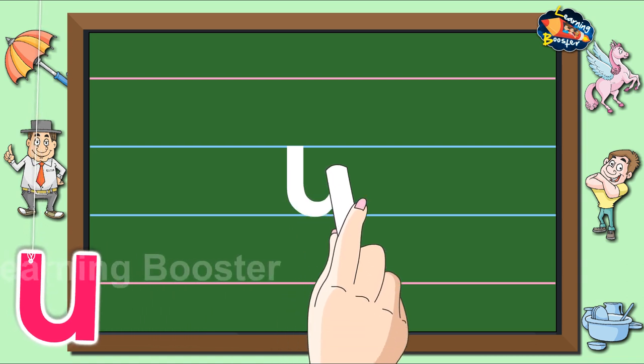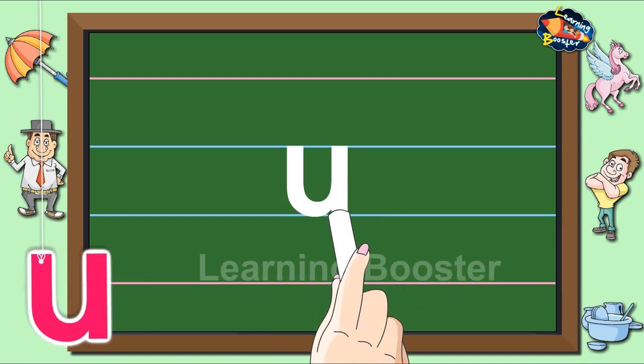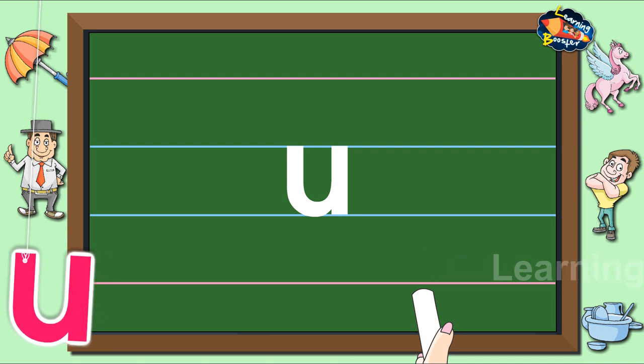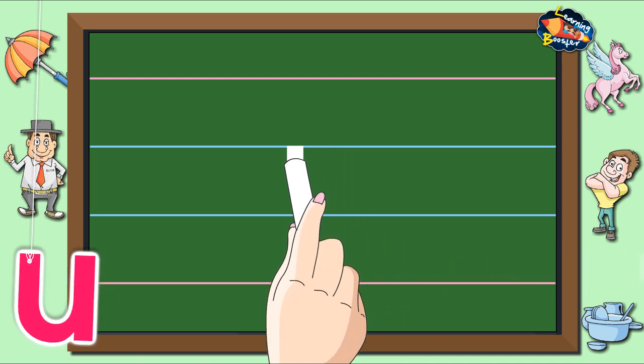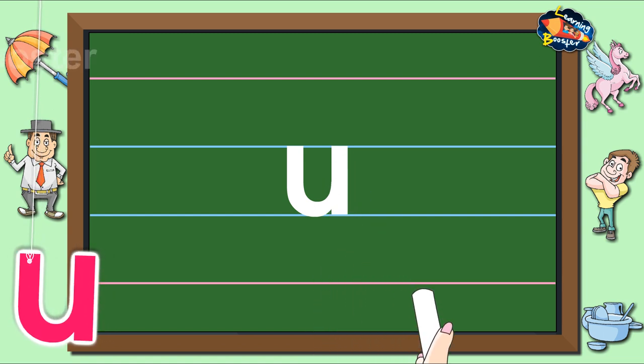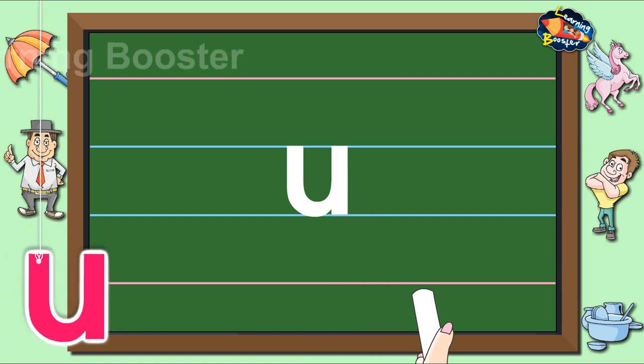Then go to the waistline and make a standing line till the baseline. Let us look at it once more. A short standing line with a curl to the right and a short standing line makes letter U.